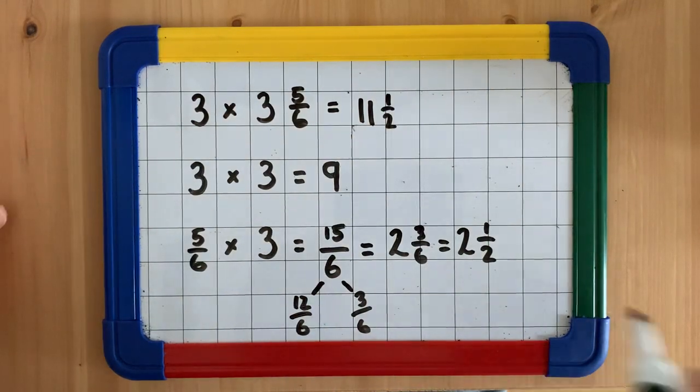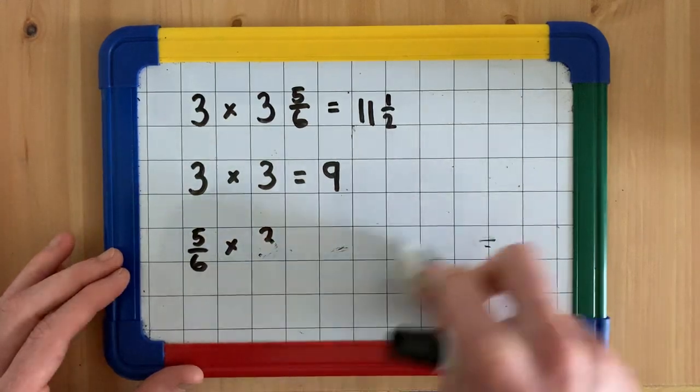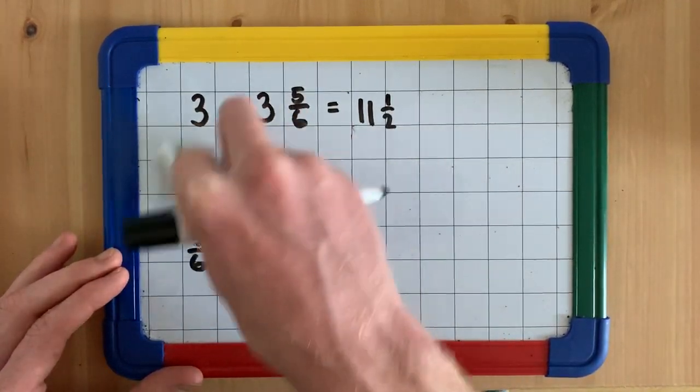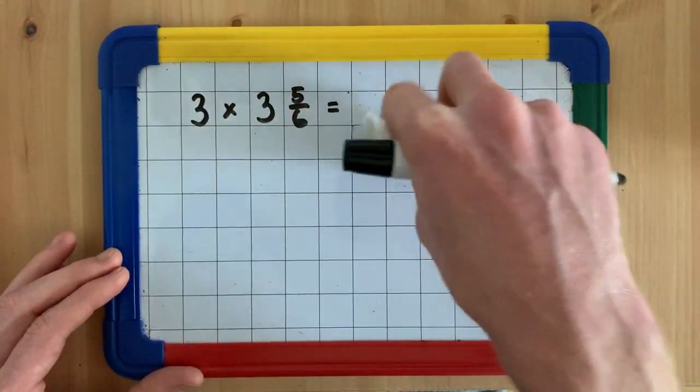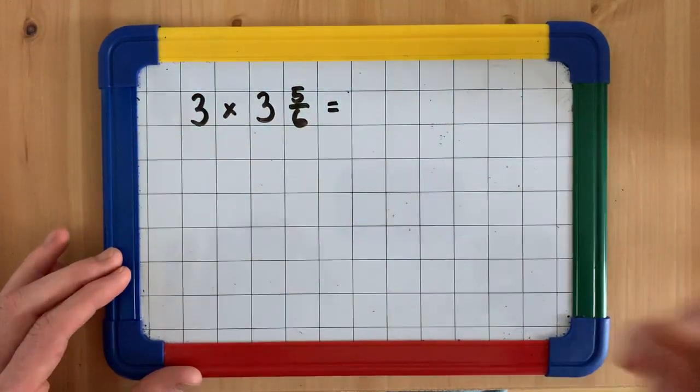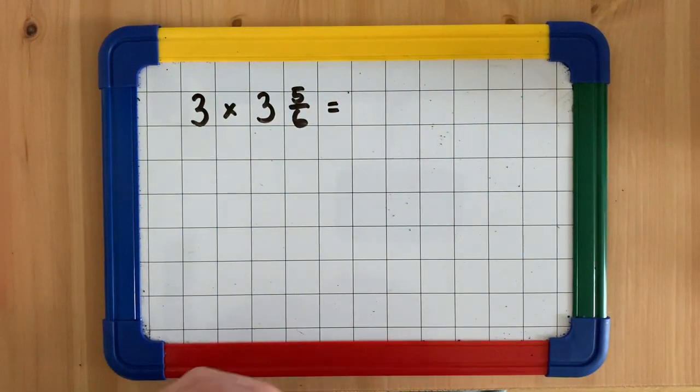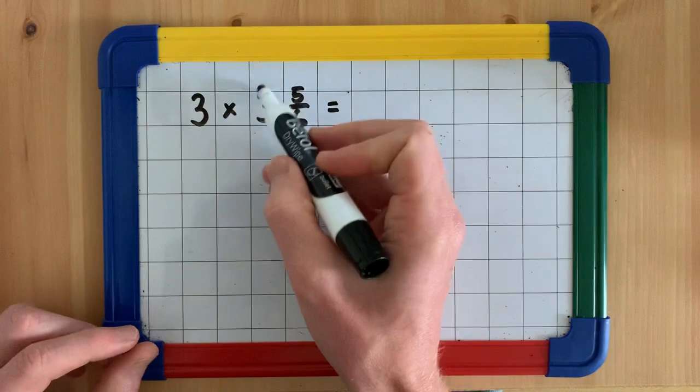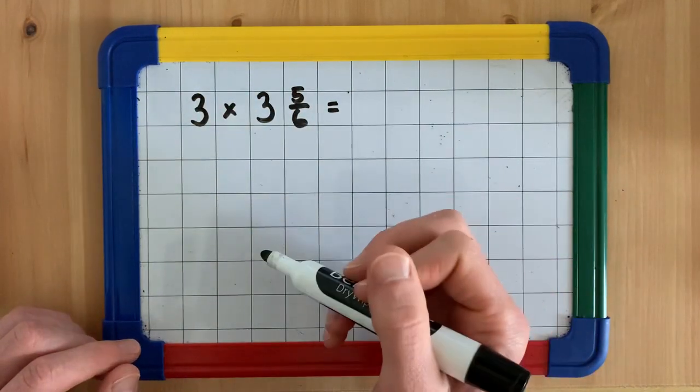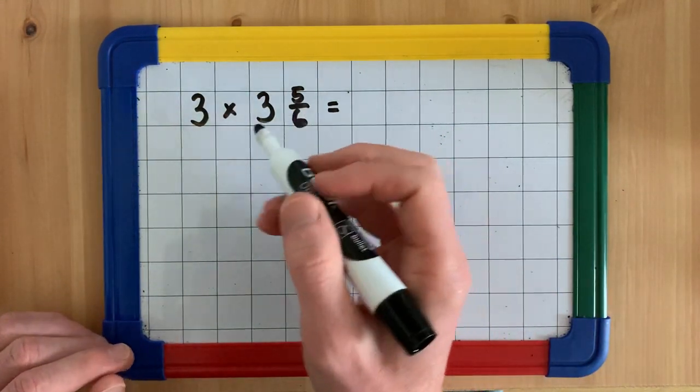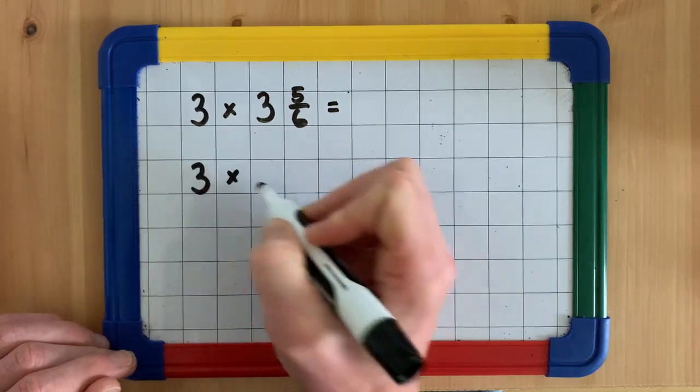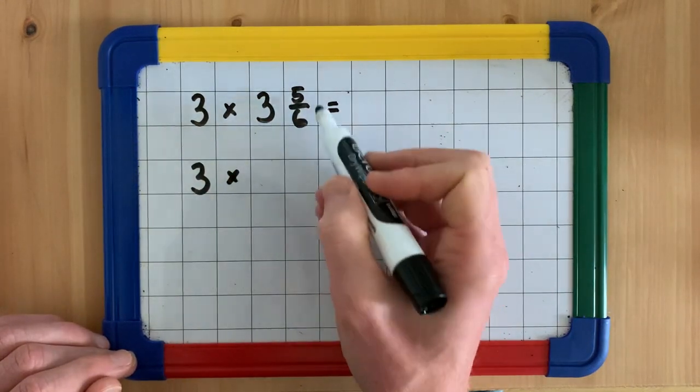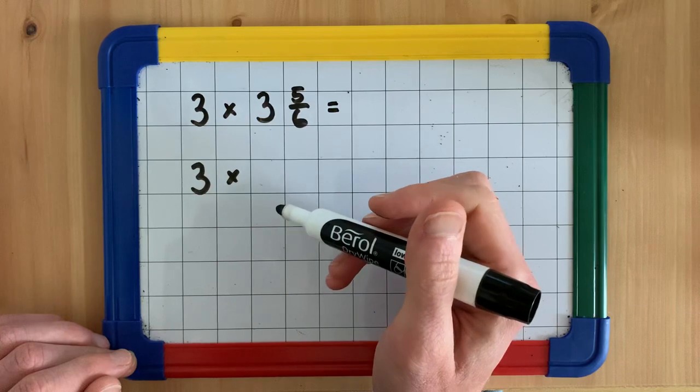Now, we can also solve this equation using another method. And this method requires us to turn our mixed number into an improper fraction. So, we'd still have 3 times. And we've got to turn this mixed number into an improper fraction.